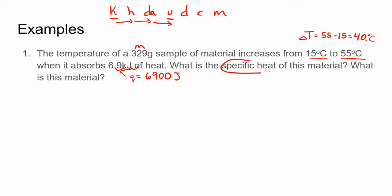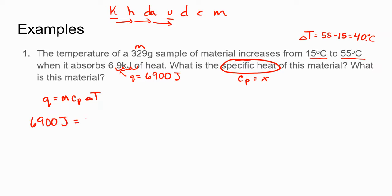We are looking for the specific heat, so Cp is our unknown x, and then we'll use it to identify the material. Using Q = MCpΔT from page three of your reference tables, we plug in: 6900 joules equals 329 grams times x times 40 degrees Celsius.